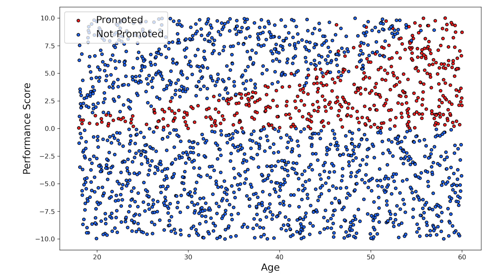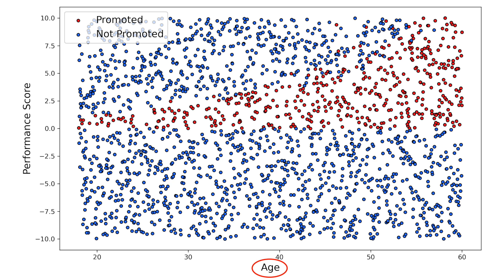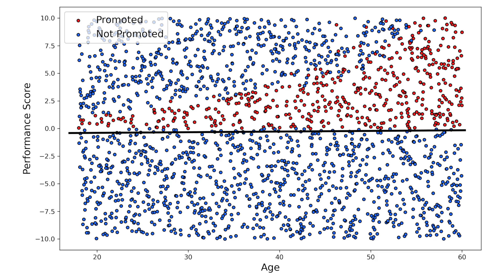We'll start with what we mean by a non-linear decision boundary. Take a look at the scatter plot of promotion outcomes for 2000 employees. On the y-axis we have the employee's performance for the previous year, and on the x-axis we have the employee's age. The points for promoted employees are red, and those not promoted are blue. Clearly there's a relationship between the promotion outcome and employee's age and performance score, but it would not be possible to draw a straight line that separates those who were promoted from those who were not. In other words, promotion has a non-linear relationship with the two features — we have a non-linear decision boundary.